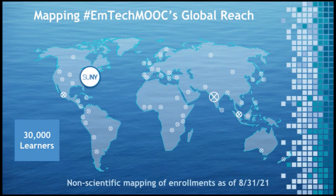This screen shows the reach of EmTech. In the three years that the course has existed, 30,000 learners have enrolled from 150-plus countries. You'll see on the map that there are a few countries with bigger circles than others — India and Mexico are some of the countries that very often enroll in EmTech. The biggest circle is over New York State, which represents the state where SUNY is located.